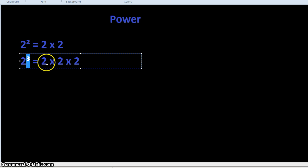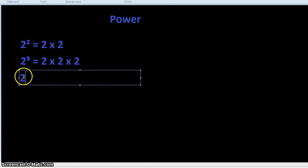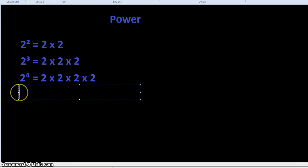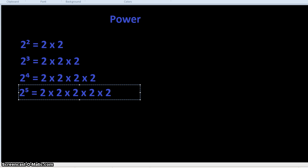So you're multiplying whatever the number or symbol is by itself that many times. 2 to the 4 is 2 times 2 times 2 times 2. One way of remembering this is to literally write out the number the number of times it says in the power, then just add the multiplication signs. So 2 to the 5 is 2 written out 5 times: 2 times 2 times 2 times 2 times 2, which equals 32.